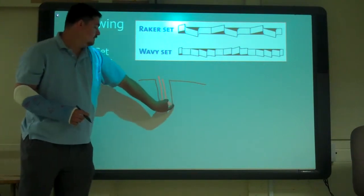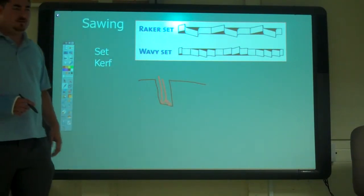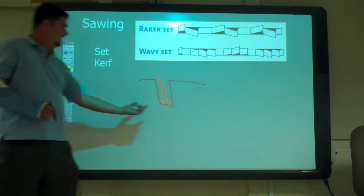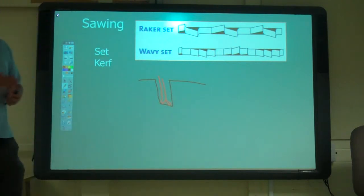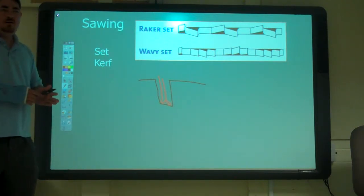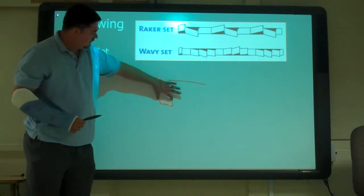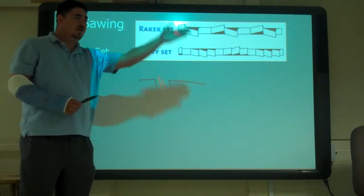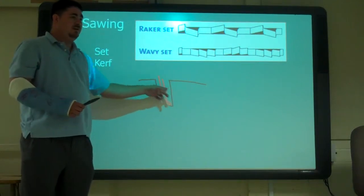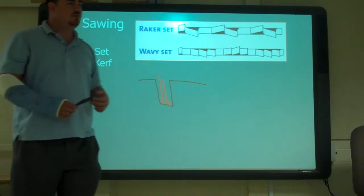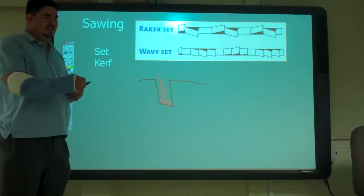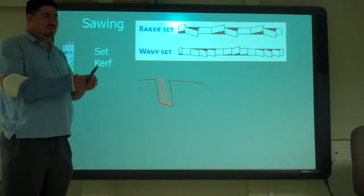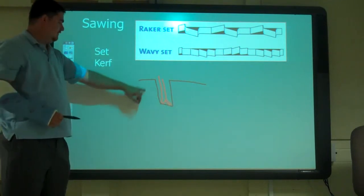And so this whole thing is called the kerf. That whole space is called the kerf. Whenever you're cutting something, you have the kerf, which is the space that's required to make the cut. A bigger kerf means more space because you've got more room to get rid of material. Have you ever done it where your saw gets stuck because it just pinches on it because it doesn't have enough kerf?